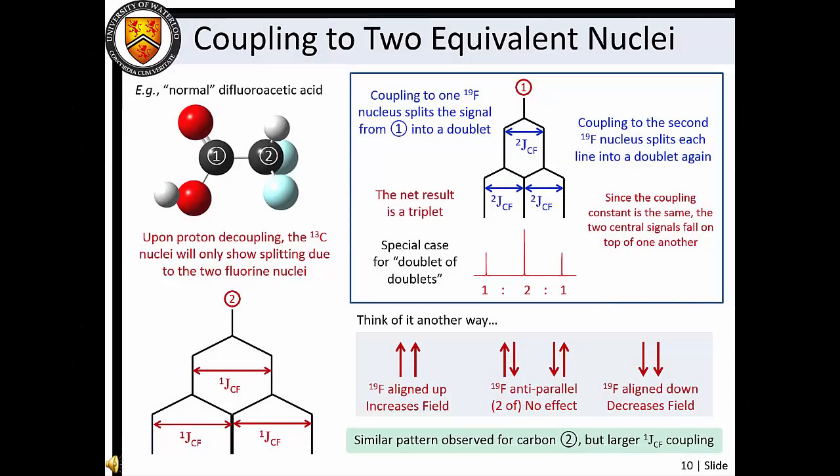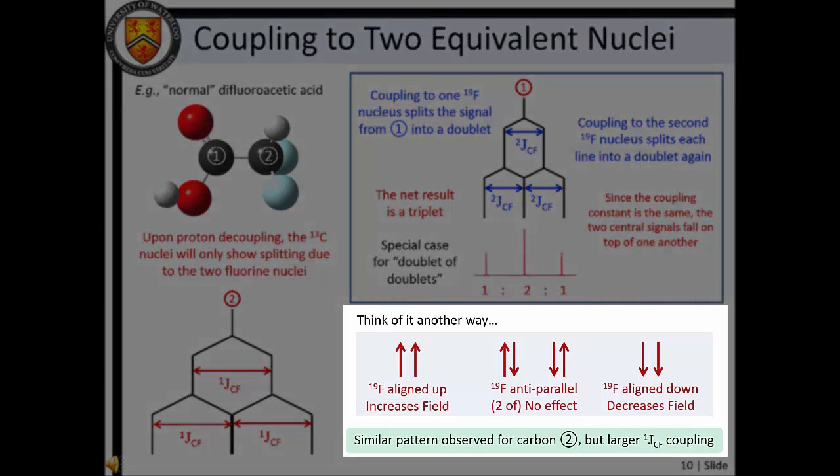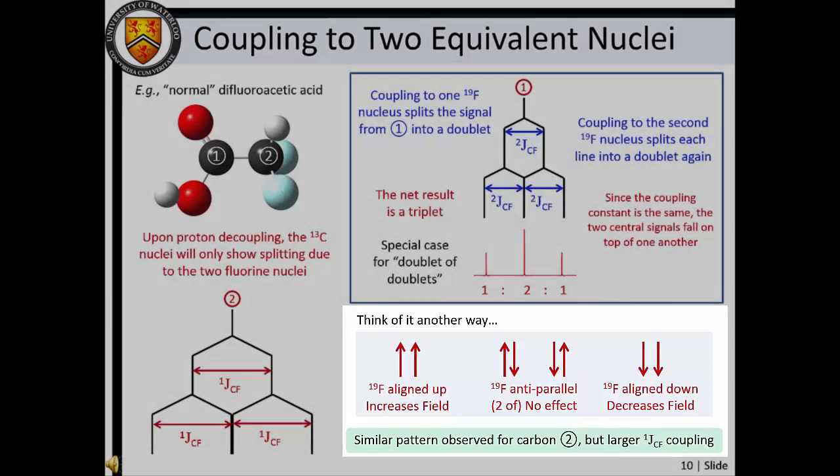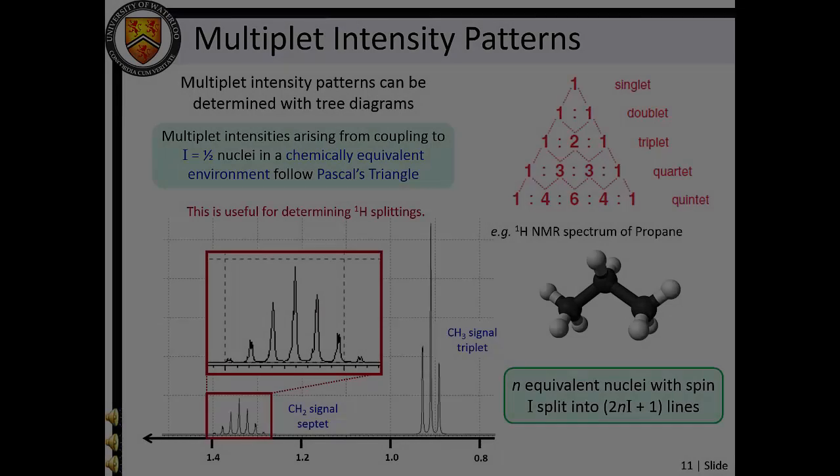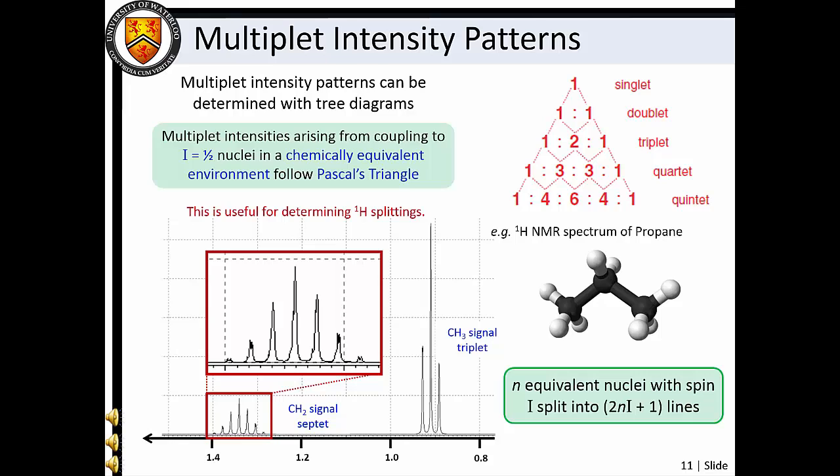If a nucleus is instead spin-coupled to two equivalent nuclei, the interaction is such that a triplet pattern is produced. This can be considered a special case for a doublet of doublets, wherein the two central transitions have overlapped due to the identical spin-coupling interactions. As a result, the relative intensities for the multiplet components of a triplet are 1 to 2 to 1. We can also think about this from an alignment standpoint. For two equivalent nuclei, there is one spin arrangement that can lead to an increased effective magnetic field, two spin arrangements whereby the effective field is unchanged, and one spin arrangement that leads to a decreased effective magnetic field. We find that multiplet intensities arising from coupling to chemically equivalent I equals one-half nuclei follow Pascal's triangle.